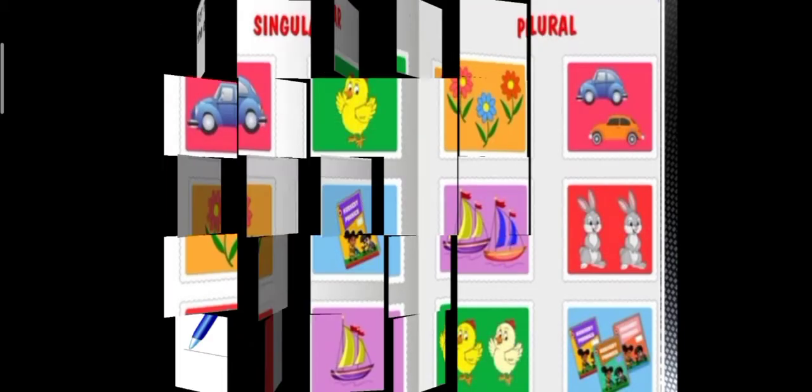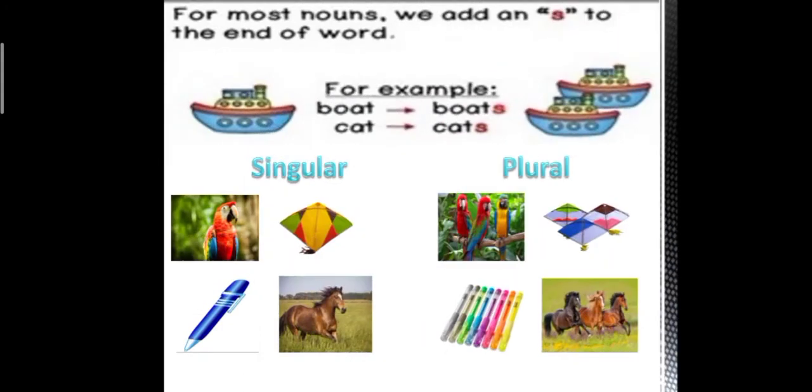Time to play a small game. Let's try to name the nouns in singular and plural forms. In all these nouns, you are adding an S to make it into a plural form. For making a singular noun to plural noun, we usually add an S to make it plural. For example, boat becomes boats and cat becomes cats. Just by adding an S, you convert a singular noun into a plural noun.